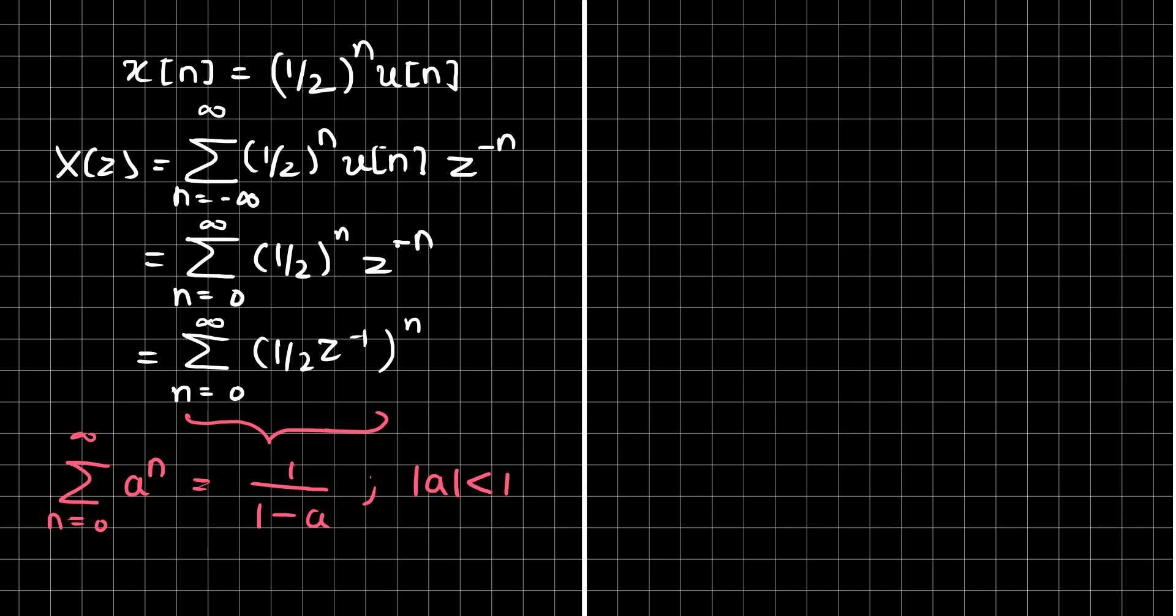Therefore, the value of our Z-transform is equal to X(z) equals 1 upon 1 minus a. Here our a is 1 by 2 times z inverse, which can be simplified as z upon z minus 1 by 2. Now all this is true only if the absolute value of our a, that is 1 by 2 times z inverse, is less than 1, which can be simplified as mod of z greater than 1 by 2.